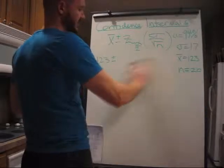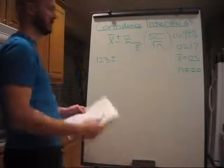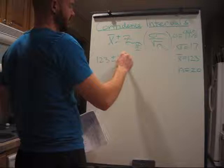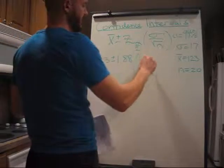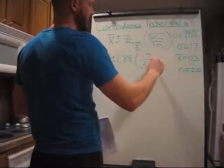And since this is z-table, that means the curve is symmetrical, so we have plus and minus 1.88 times 17 over square root of 20.